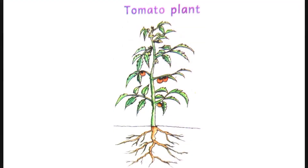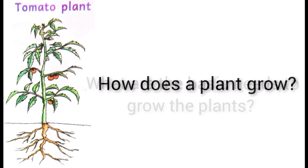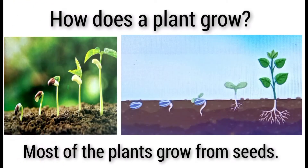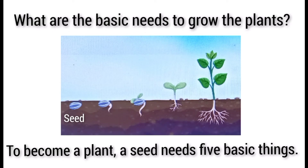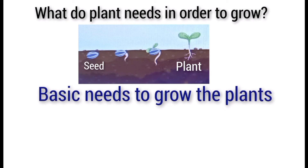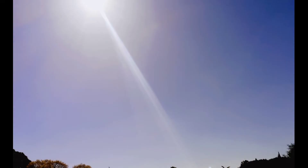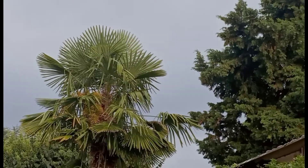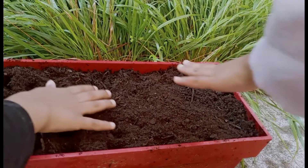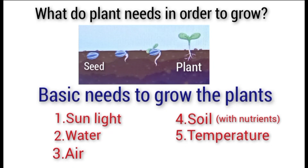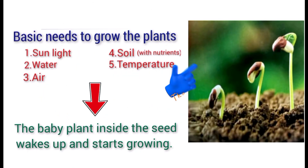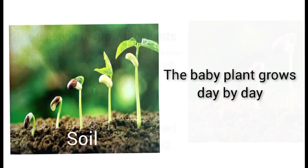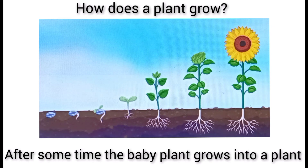Let us see how a plant grows and what are the basic needs for plants to grow. Most plants grow from seeds. For a seed to grow into a plant, it needs five basic things: sunlight, water, air, soil, and temperature. With the help of these basic things, the baby plant inside wakes up and starts growing day by day until it becomes a plant.